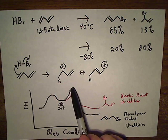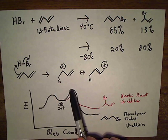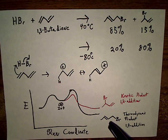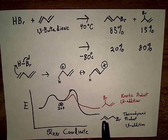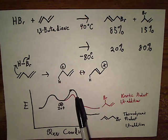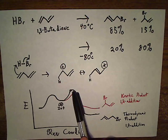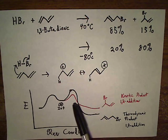And then you'll have enough energy to finally make it over here, up to the transition state for the 1,4 product, and end up here. And then it'll be more likely that because this is more stable, you won't have enough energy to go back up this energy hill to undergo the reaction again.